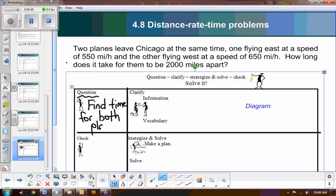We want to find time for both planes. That's what we're looking for. Now let's write down the facts of the problem. So the facts are we are leaving Chicago and one is flying east, so we have an east plane, and then we have a west plane, and we know that the east plane has a rate of 550 miles per hour, and the west plane has a rate of 650 miles per hour.